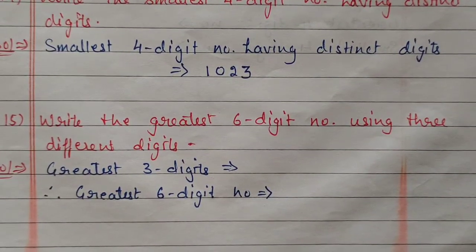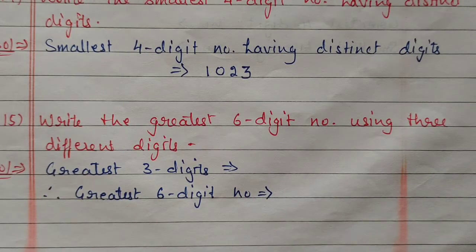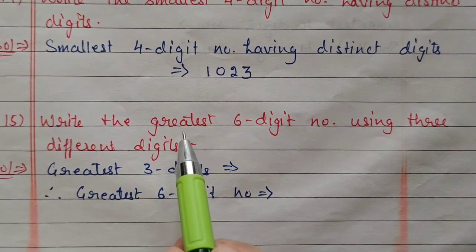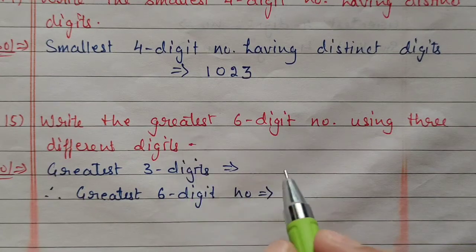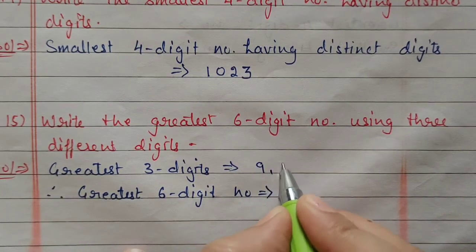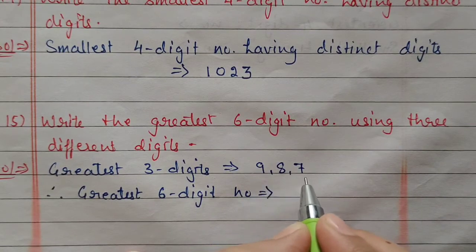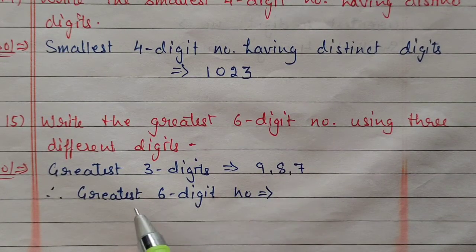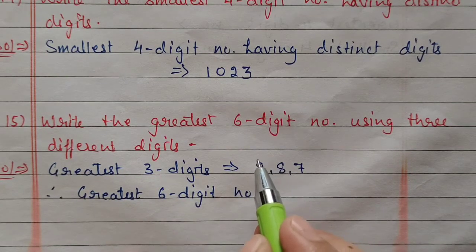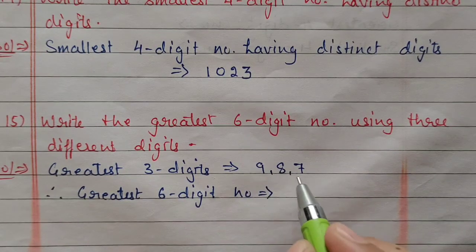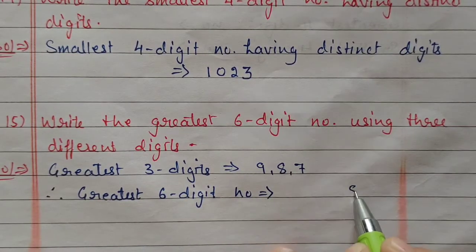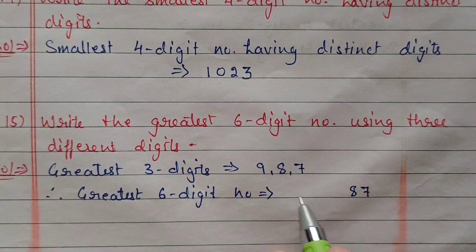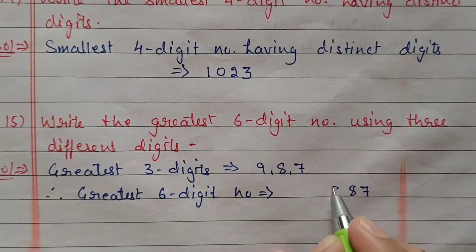Next question number 15: write the greatest 6-digit number using 3 different digits. We take the greatest 3 digits: 9, 8, and 7. To form the greatest 6-digit number, repeat only the greatest digit 9 for the first four places. The last two places from the left are filled with 8 and 7. So remaining 4 places are filled with 9, giving 999987.